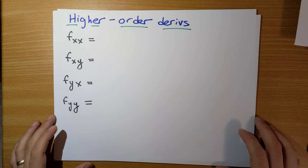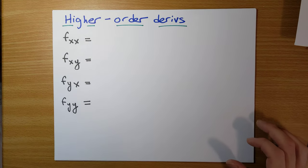In this section on partial derivatives, so far we've been learning about first partial derivatives. The natural question you should be thinking about is what happens for second partial derivatives, third partial derivatives, and so on. So let's have a discussion about higher-order derivatives.